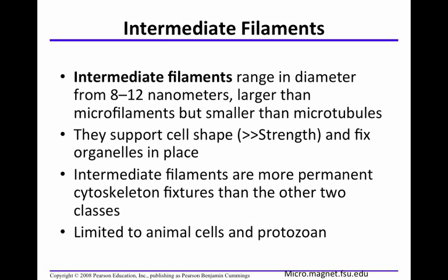The last type is intermediate filaments. They support cell shape and fix organelles in place. In terms of size, they're larger than microfilaments but smaller than microtubules — hence intermediate. If a cell must support something requiring great strength and high tensile strength, you'll find more intermediate filaments there. They are more permanent filaments than the other two types.